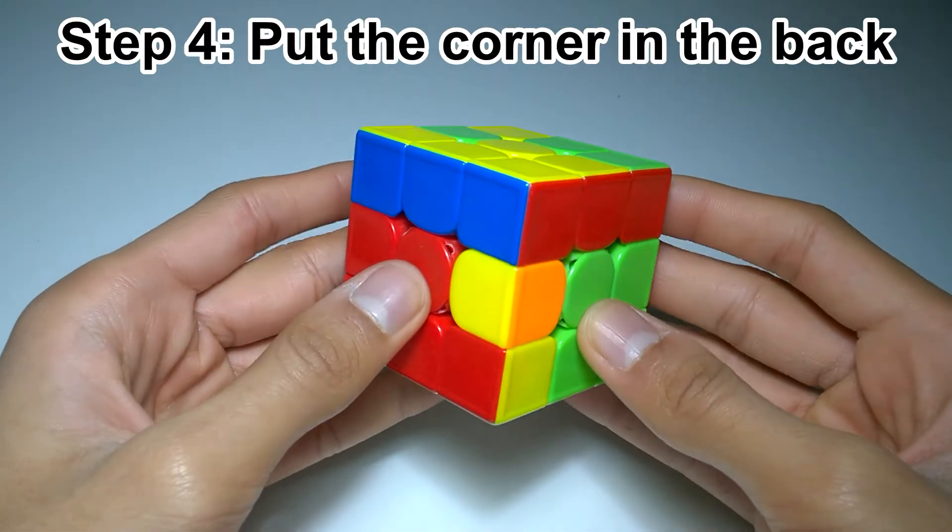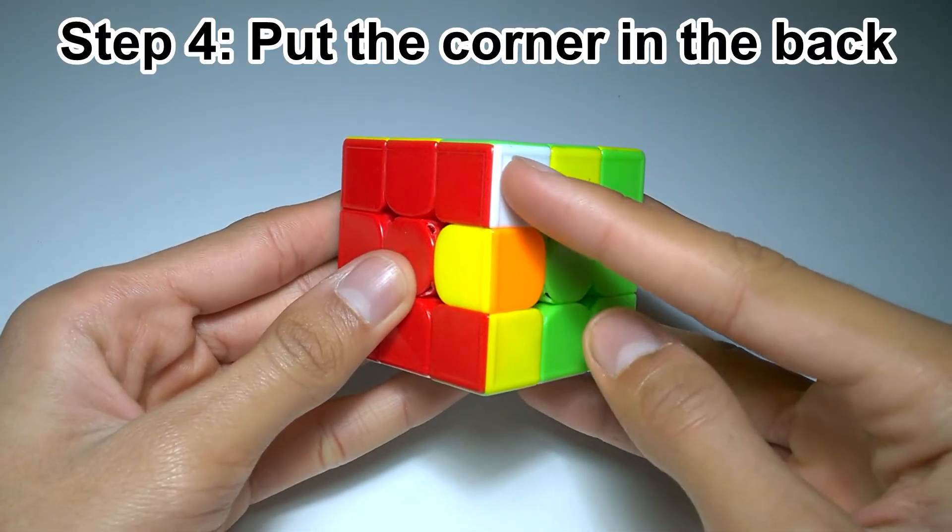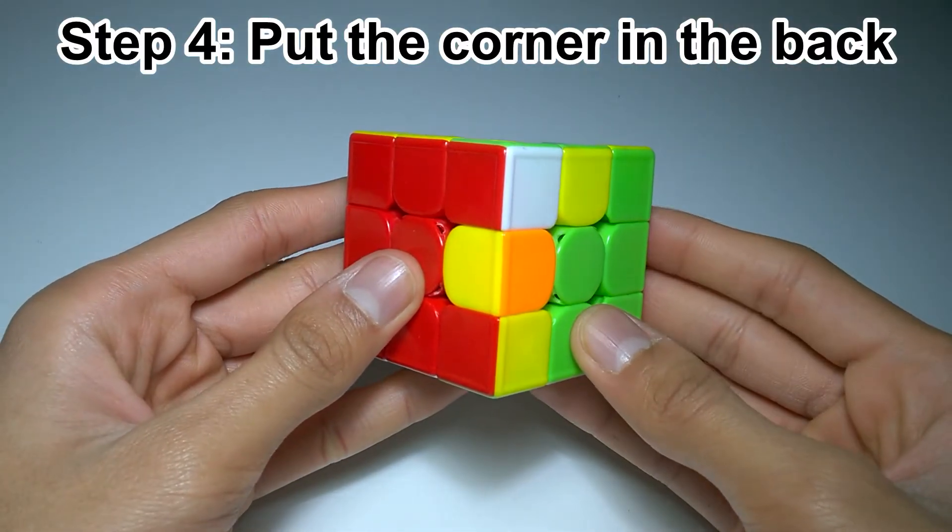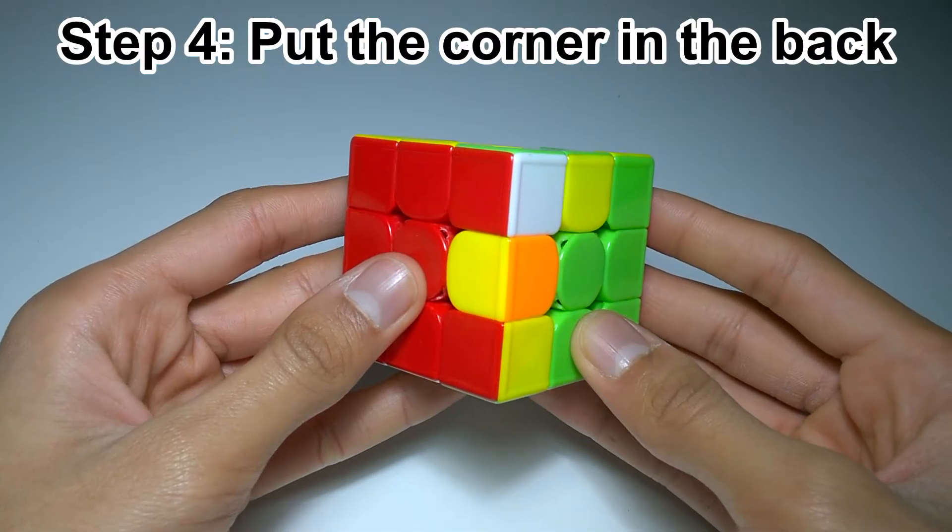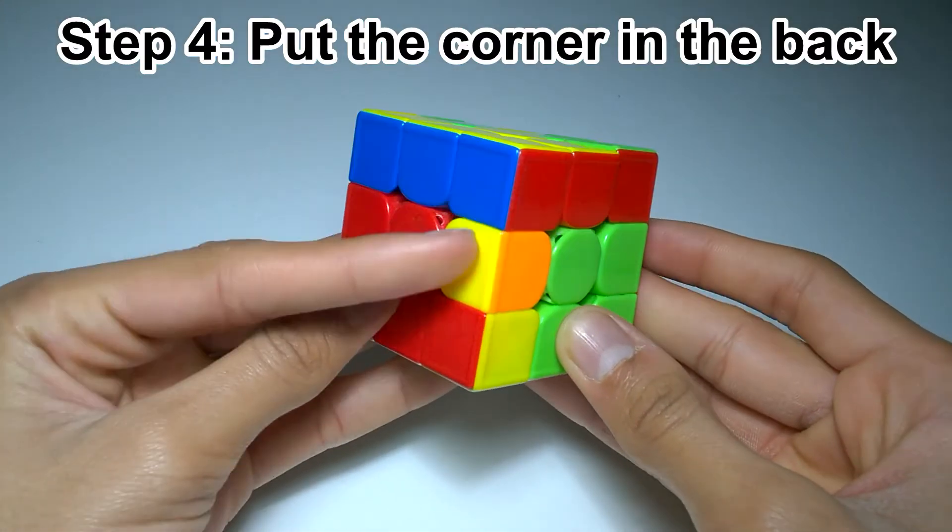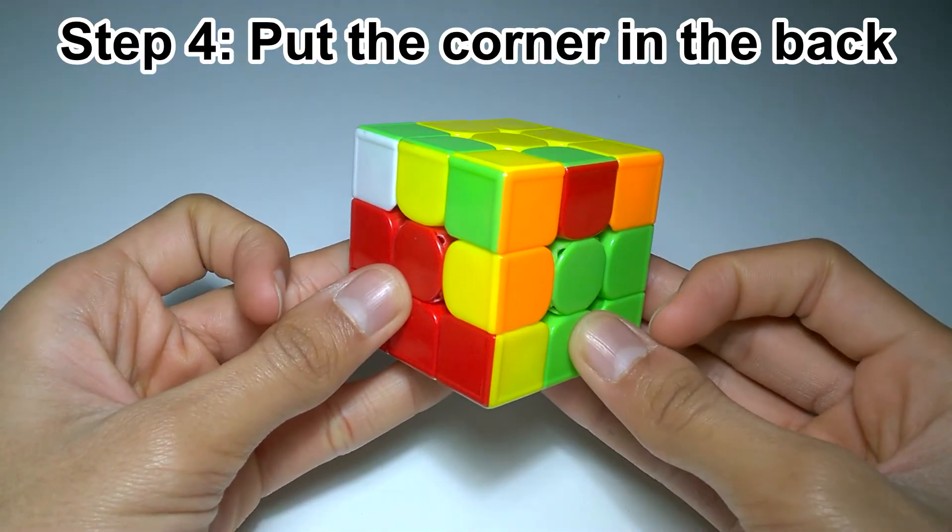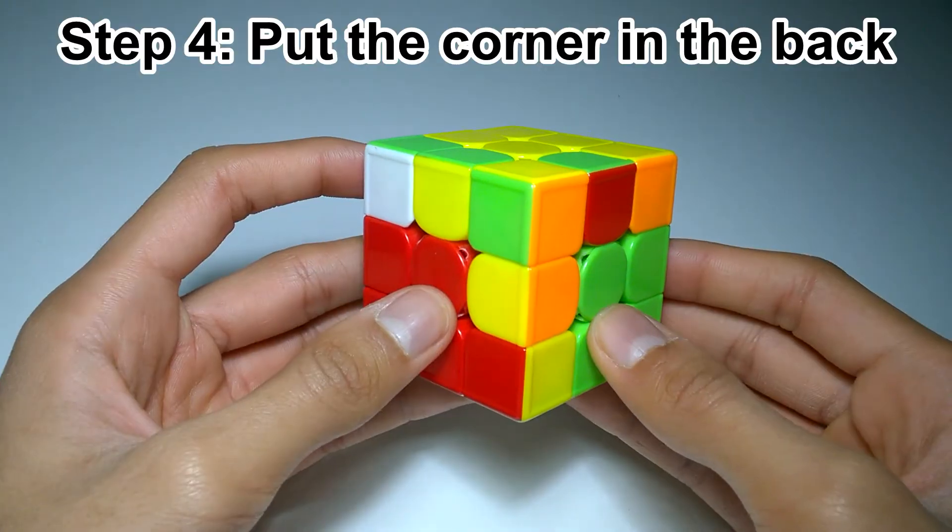Step four is probably the easiest step. Move the corner piece so that it's above its correct location. So here, it needs to go into this slot. And then we'll do one U move so that we can still see the white sticker. So in this case, doing U' would hide the white sticker. So we have to do U instead. Then rotate so this corner is in the back.